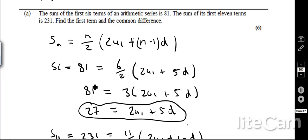And then it's just a simple case of simplifying, so there we go, 8u1 equals 3 brackets 2u1 plus 5d, which generally gives me an equation, 27 equals 2u1 plus 5d, so that is the first equation that I've got.